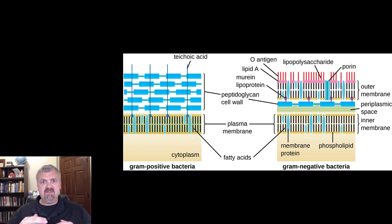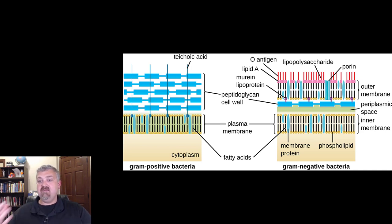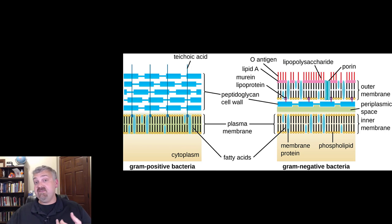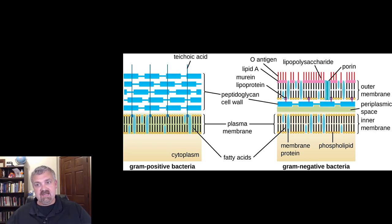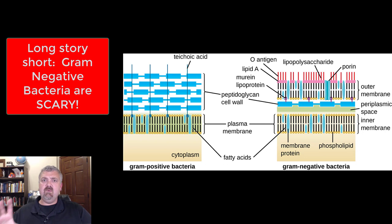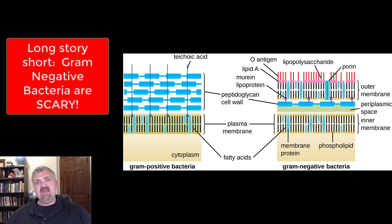To review: gram-positive bacteria have a big, thick peptidoglycan cell wall — their primary protection is physical. Gram-negative bacteria are more fragile mechanically, but they have this outer membrane force field that makes them invisible to most phagocytes and complement. Within that outer membrane they have the lipid A toxin making them dangerous even upon death, and the periplasmic space where they can degrade or pump out agents that would normally kill the cell. That's why gram-negative bacteria are our biggest concern — the nightmare organisms of the present and future. That is the gram-positive and gram-negative cell walls, and I'll do a separate video on atypical cell walls.